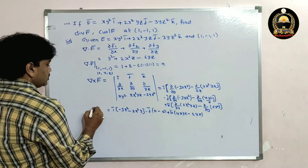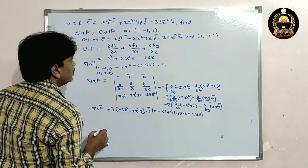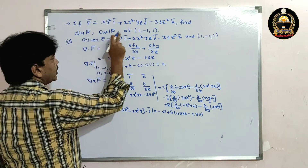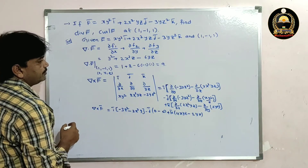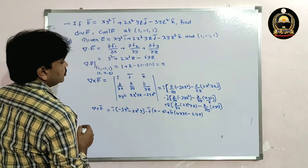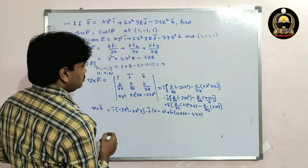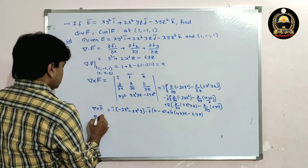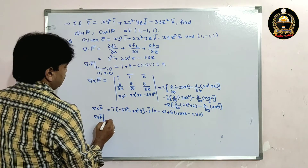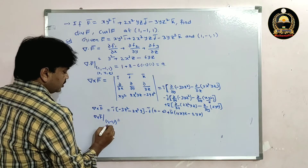So del cross f̄ = ī(-3z² - 2x²y) + 0j̄ + k̄(4xyz - 2xy). Now evaluating del cross f̄ at (1, -1, 1), substituting x=1, y=-1, z=1.